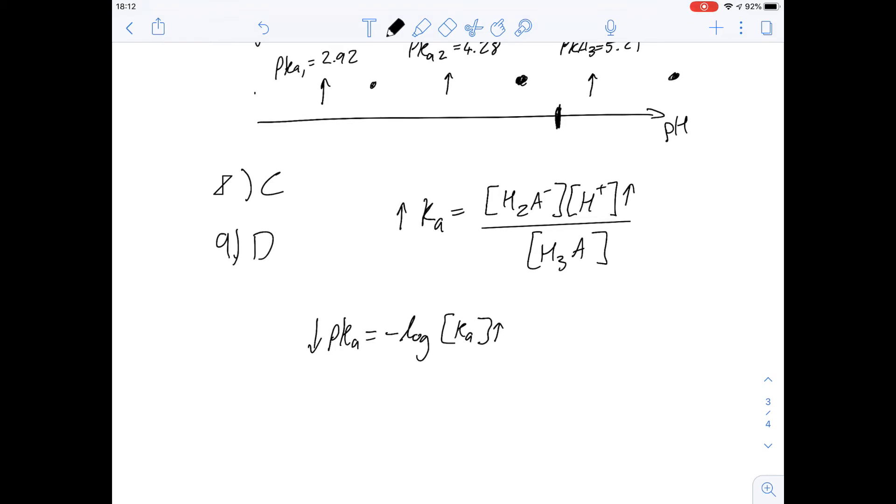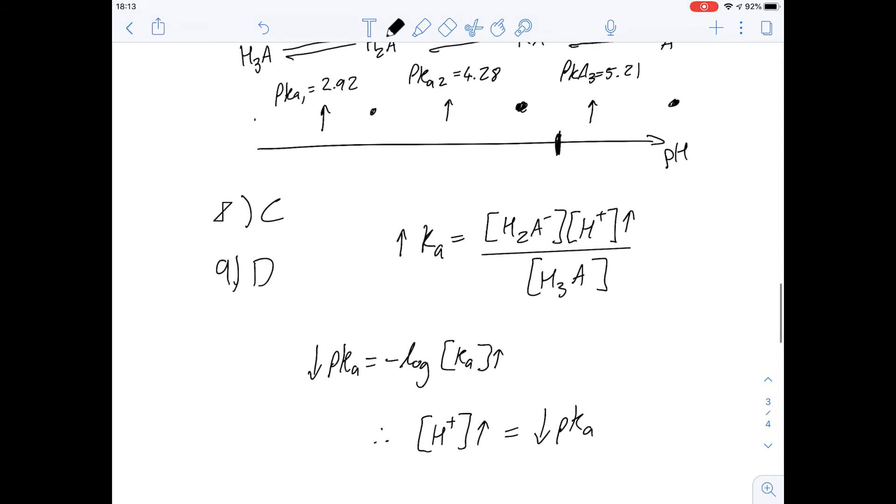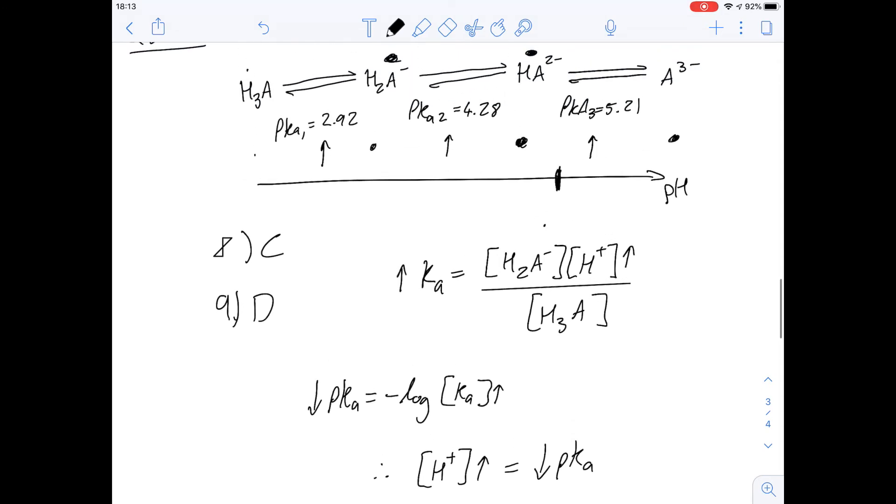And so then what that tells us is that if you increase the concentration of hydrogen ions, that corresponds to a decrease in the pKa, and that's going to be true for all the different pairs that you pick. So if you put HA²⁻ in there, then on the denominator you would have H₂A⁻. It doesn't matter because in principle the same thing is happening.